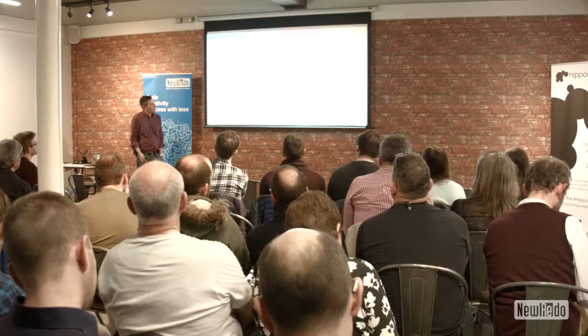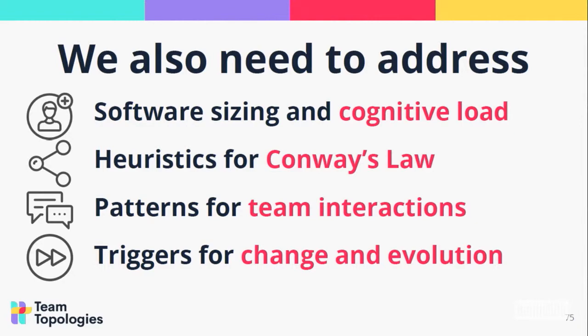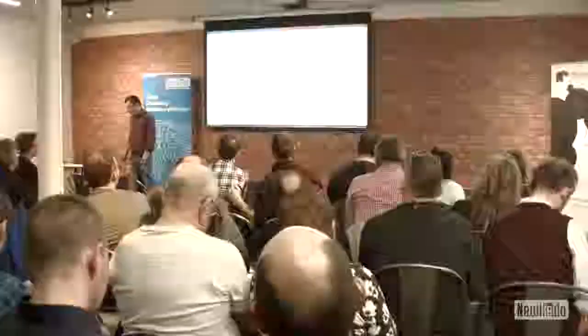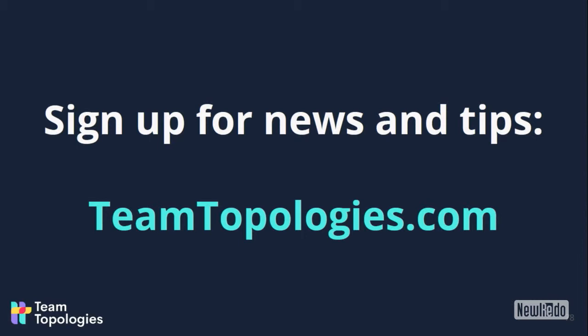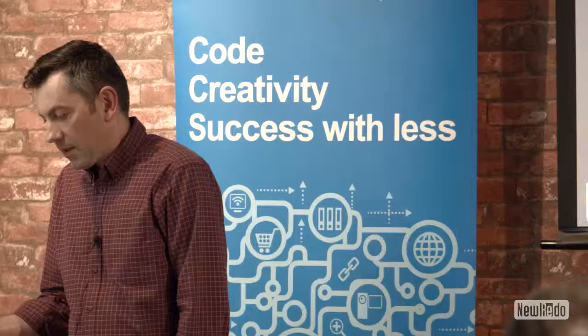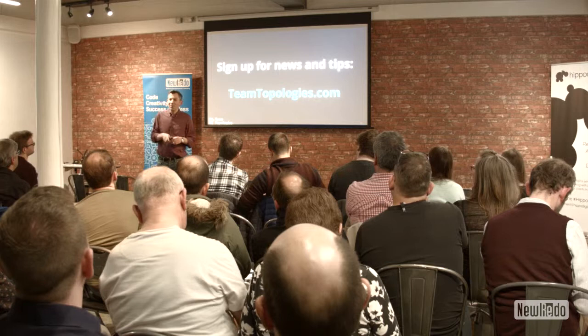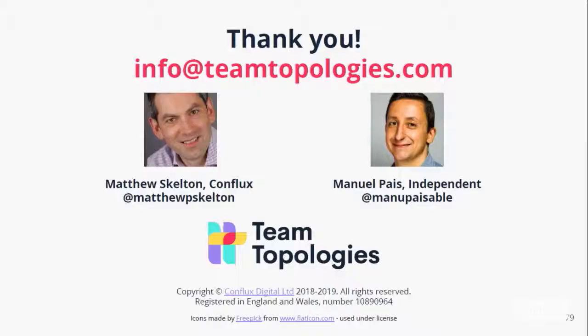Although the Spotify model is great, we've looked at four things we also need to address: cognitive load, Conway's law, the three different team interaction modes, and then using those to help evolve the organisation. If you're interested in more details, head to teamtopologies.com and sign up — we'll be doing Q&As and interviews. And if you're even more interested, buy the book on the 6th of September. Thank you very much.